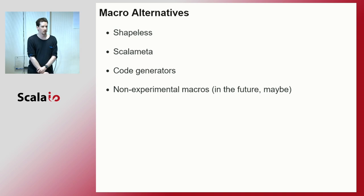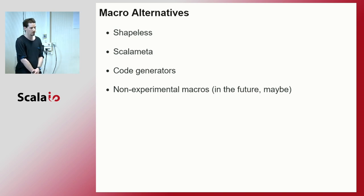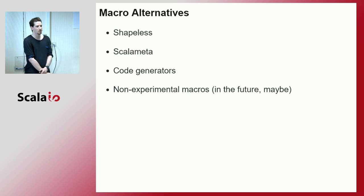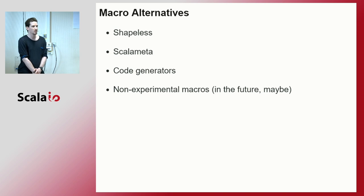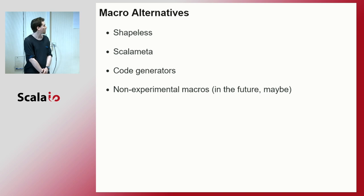As I said, macros are to be avoided if you can. There are some alternatives. Shapeless has sophisticated macros created so that you don't have to write macros yourself — it exposes APIs using implicits and types to achieve some of what macros allow. There's also ScalaMeta, a newer technology for metaprogramming in Scala — not a full replacement but more civilized and easier to use. Code generators can also be useful when macros aren't enough or you want better IDE support. Hopefully in some future version of Scala we'll have non-experimental macros that are less scary.